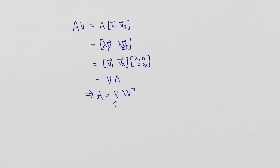And since the columns of V are perpendicular, the inverse is the same as the transpose of V. This means that we can also write that A is equal to VΛV'.